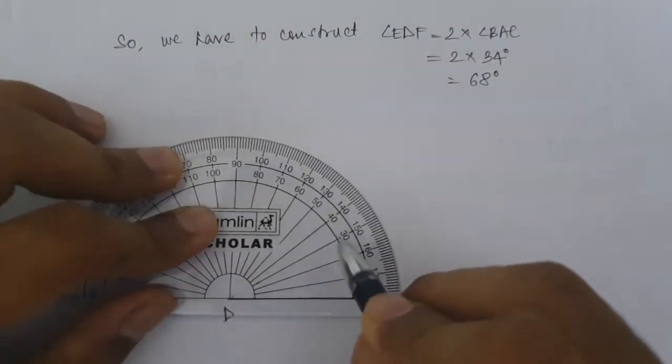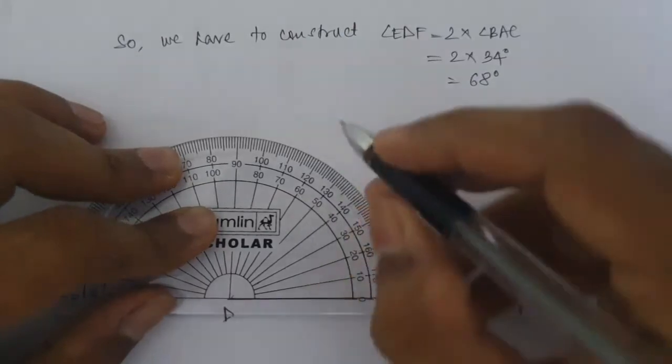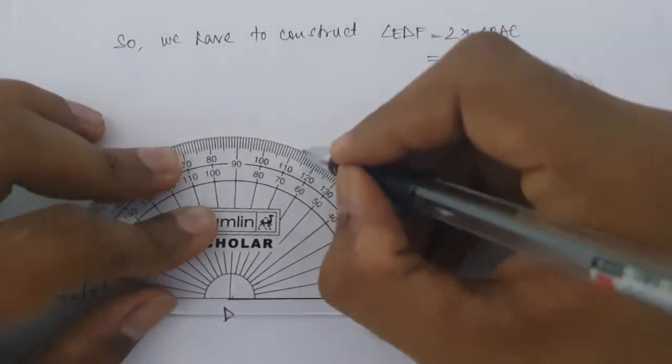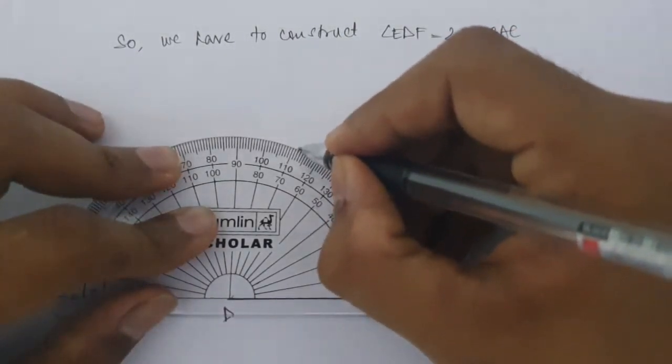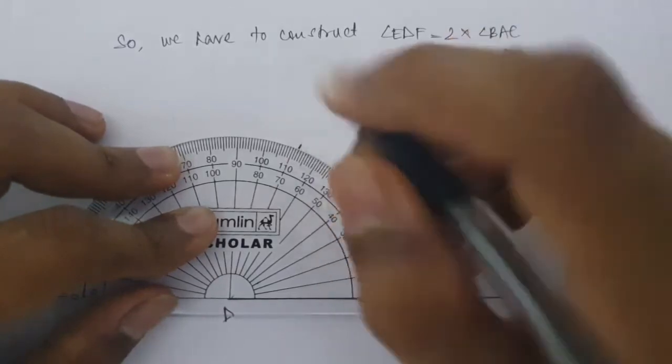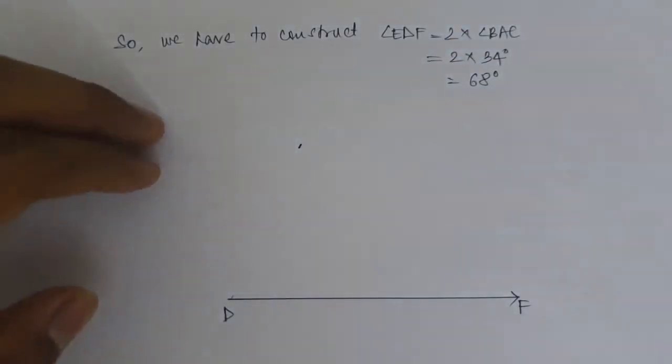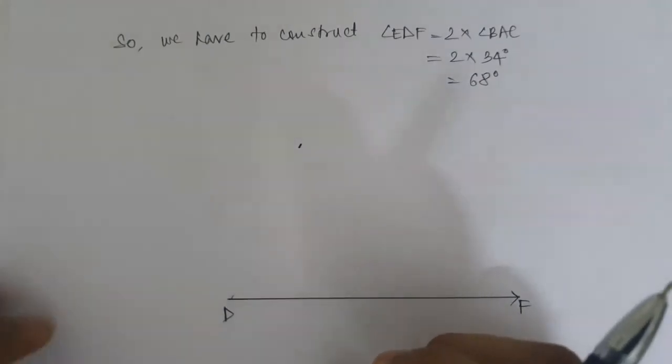So looking at these readings 68 would be here. So we make a mark over here and then simply join D and that point.